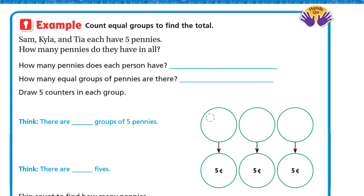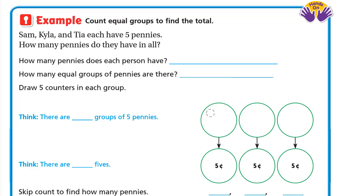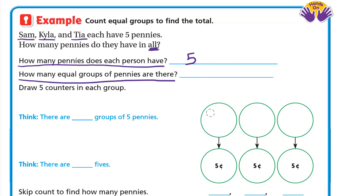Another example: count equal groups to find the total. Sam, Kyle, and Taya each have five pennies. How many pennies do they have in all? Each person has five pennies, and we need the total. How many equal groups of pennies are there? We have three people, so three groups.